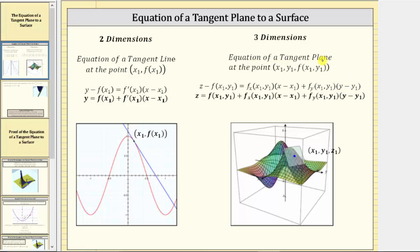The equation of a tangent plane at the point x1 comma y1 comma f of x1 comma y1 looks very similar to the equation of a tangent line in two dimensions. For the plane in three dimensions, we have the partial of f with respect to x, which gives the slope of a tangent line in the positive x direction, and the partial of f with respect to y, which gives the slope of the tangent line in the positive y direction. So the equation is z minus f of x1 comma y1 equals the partial derivative of f with respect to x times x minus x1, plus the partial derivative of f with respect to y times y minus y1. Solving for z by adding f of x1 comma y1 to both sides gives us the equation of the tangent plane, as long as the function is differentiable at the given point.